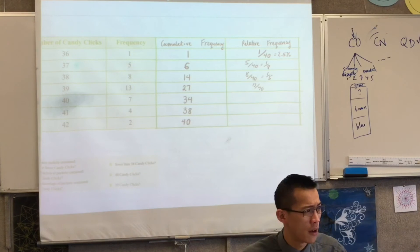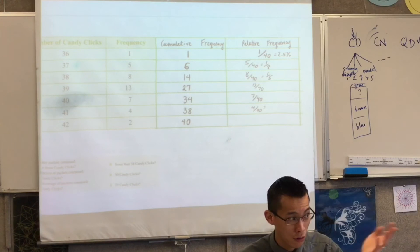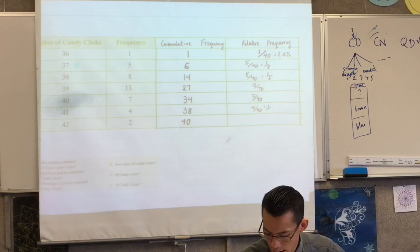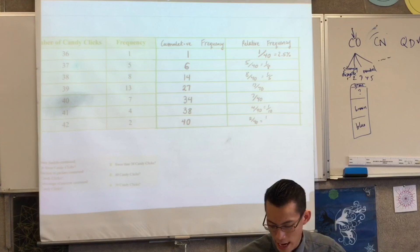13 out of 40. Can I simplify that one? Nope. 13 is prime, so I'm stuck. Seven out of 40. Can I simplify? No. Four out of 40? Two, one on 10. And then lastly, two out of 40, which is? Okay. And I'm done. I've got all of my things here.